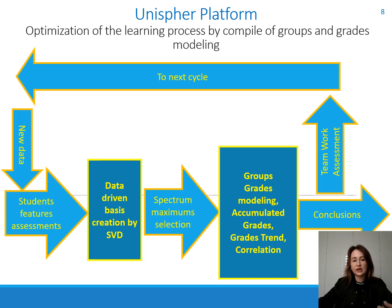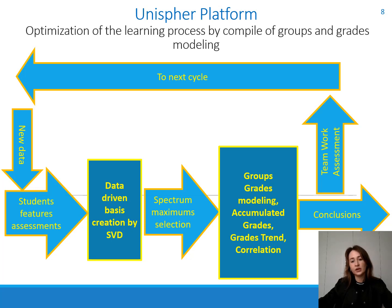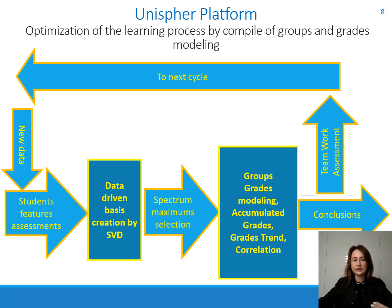Each cycle of modeling the work of groups leads to a reassessment of the characteristics of students based on the obtained data. If the conclusion about the work of groups is not satisfactory, then the following cycles of distribution of students into groups with modeling of individual and group work can be carried out until a satisfactory result is obtained.